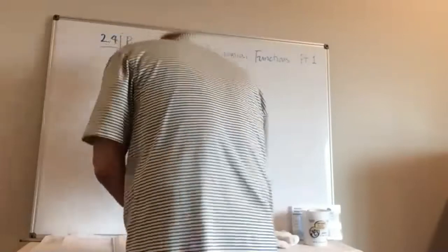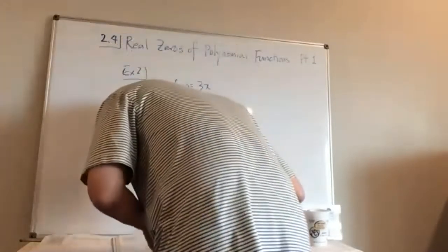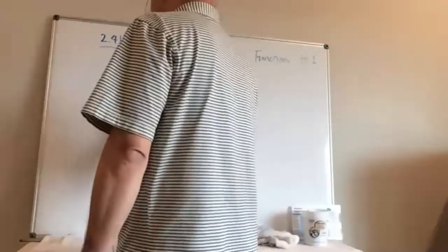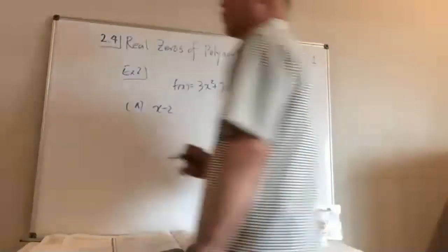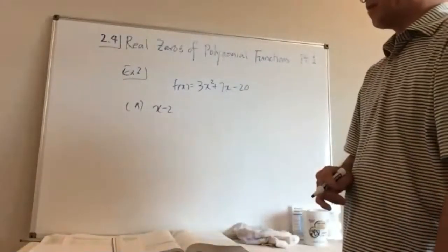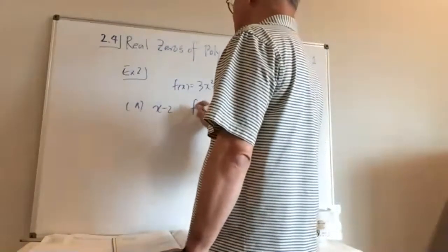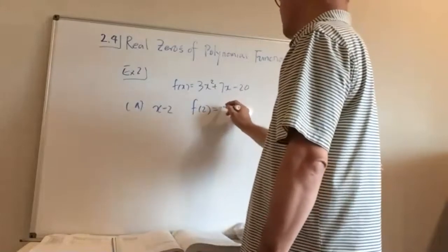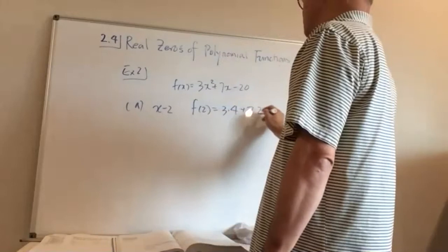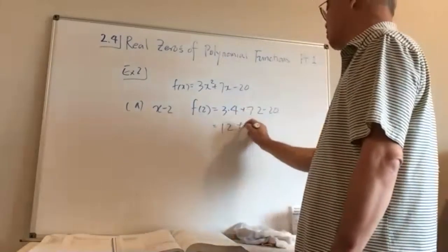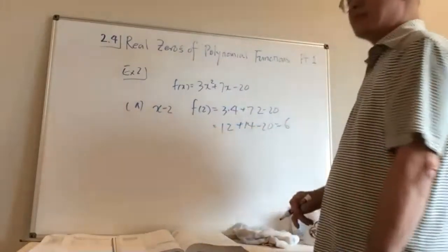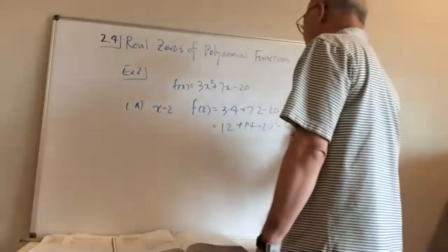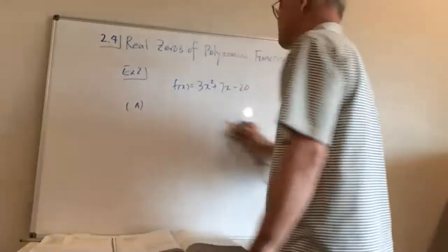Let's say f(x) = 3x² + 7x - 20, and we want to find the remainder when dividing by x - 2. By the Remainder Theorem, the remainder equals f(2). So: 3(4) + 7(2) - 20 = 12 + 14 - 20 = 6. My remainder should be 6. Let's verify this by doing the long division.